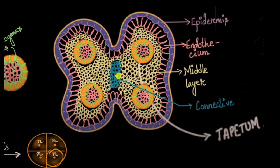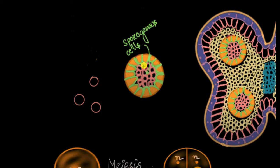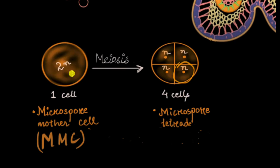The connective cells include vascular tissues with xylem and phloem, which provide nutrition and water to the developing anthers. Each cell within the sporogenous tissue that is capable of undergoing meiosis to produce four microspore cells is called a microspore mother cell, or MMC. This diploid microspore mother cell undergoes meiosis to produce four haploid microspores, which are arranged in the form of a microspore tetrad — because tet means four.